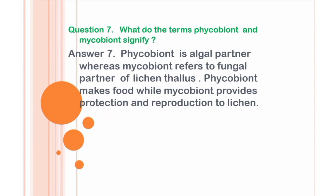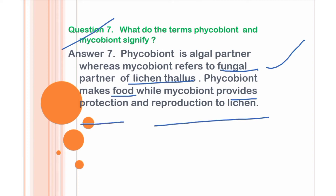Next question: what do the terms phycobiont and mycobiont signify? Phycobiont is the algal partner, whereas mycobiont refers to the fungal partner of the lichen thallus. Phycobiont (algae) makes food, while mycobiont (fungus) provides protection and reproduction to lichens. This is a symbiotic relationship in lichens between algae and fungi.